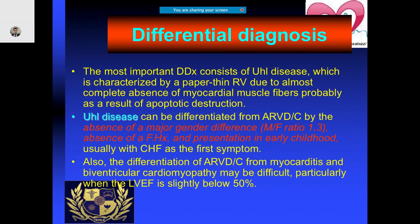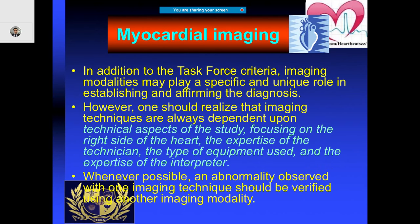If you come across these kinds of symptoms, think about differential diagnoses. One important differential is Uhl's disease, which is characterized by complete absence of myocardial muscle fibers as a result of apoptotic destruction. This should be differentiated from myocarditis and biventricular cardiomyopathy.